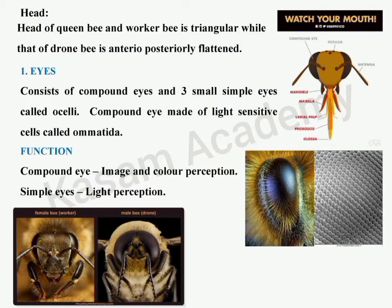Now let's discuss the head. If you look at the front view of the bee, observe the pictures — the left one is a worker bee head and the right one is a drone male bee head. The drone and queen head shape is triangular, and the male head is anteriorly-posteriorly flattened. The head consists of eyes, antennae, and mouth parts.